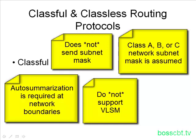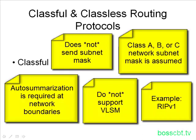An example of a classful routing protocol is RIP version 1. As we know from those tutorials, in version 1 the subnet mask was not sent along in any of the routing updates.